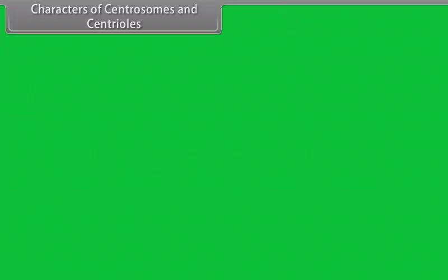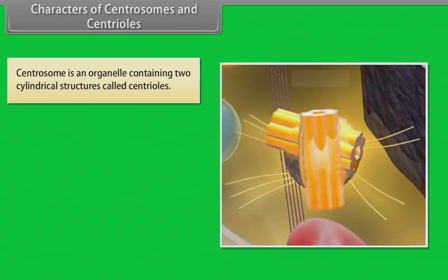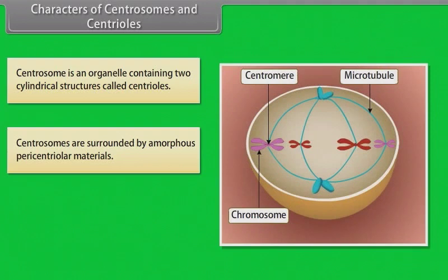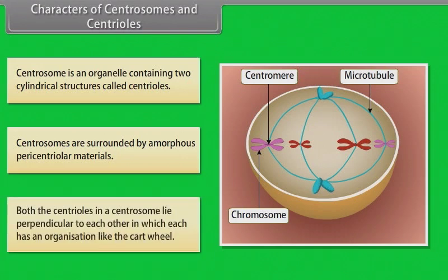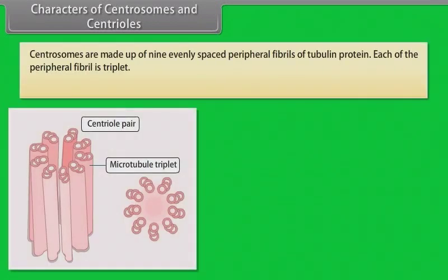Characters of centrosomes and centrioles: Centrosome is an organelle containing two cylindrical structures called centrioles. Centrosomes are surrounded by amorphous pericentriolar materials. Both the centrioles in a centrosome lie perpendicular to each other, in which each has an organization like the cartwheel. Centrosomes are made up of 9 evenly spaced peripheral fibrils of tubulin protein, and each of the peripheral fibrils is a triplet.